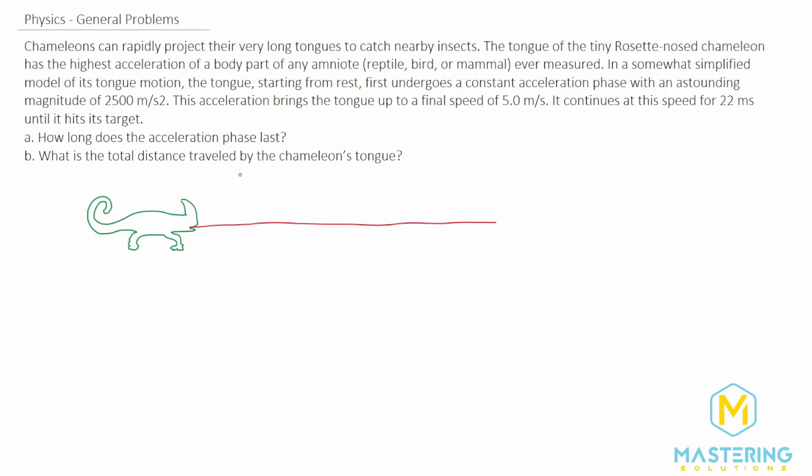They tell us that when we measure the tongue, it goes from a portion where it accelerates and then a portion where it goes at a constant speed. They want us to figure out how long the acceleration phase is and then what the total distance traveled by the tongue is.